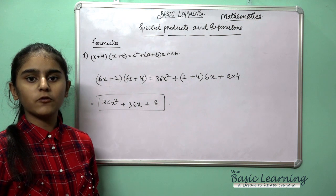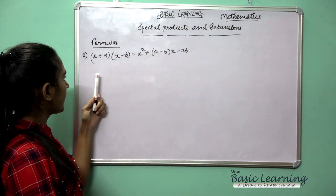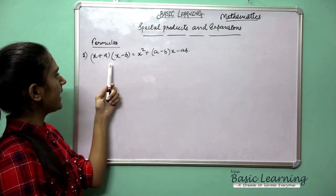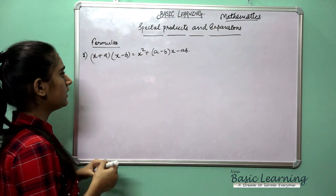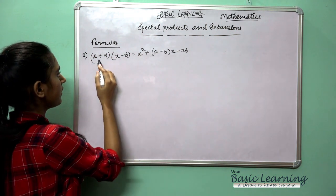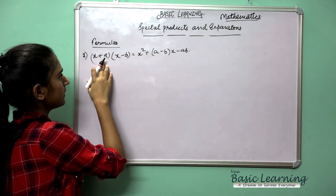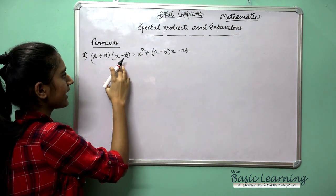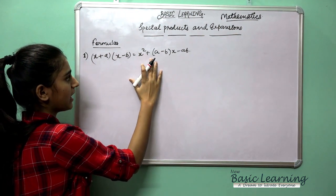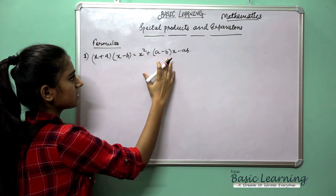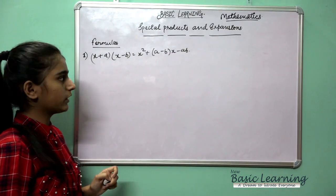Let's move on to the next formula. Our next formula is (x + a)(x − b). In the earlier part it was (x + a)(x + b); now it is (x + a)(x − b) = x² + (a − b)x − ab.